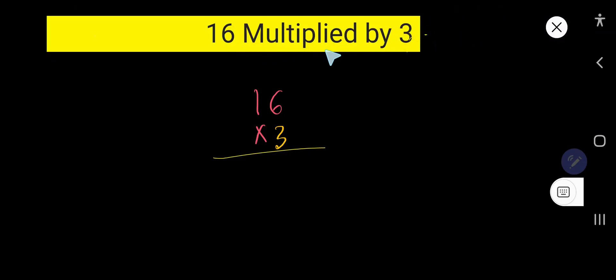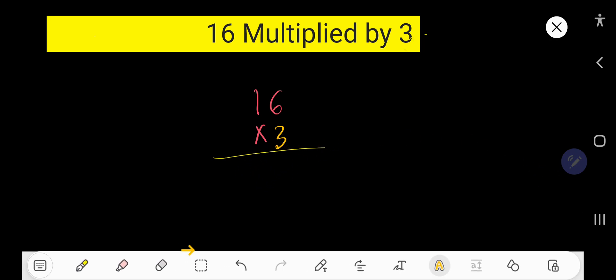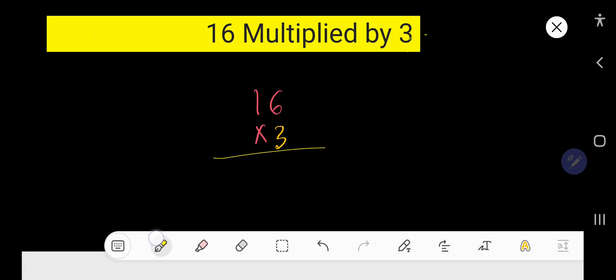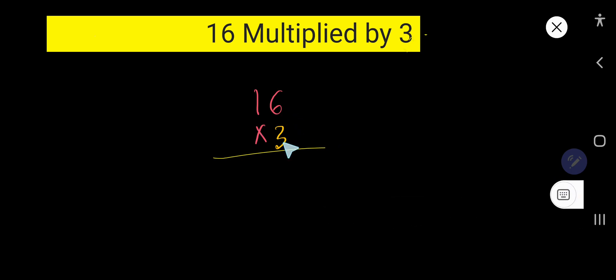16 multiplied by 3—that is, 16 times 3. How do we multiply this? To multiply 16 times 3, we need the multiplication table of 3. 3 times 6 equals 18, but if you forget the multiplication table of 3...